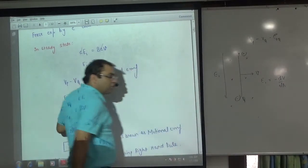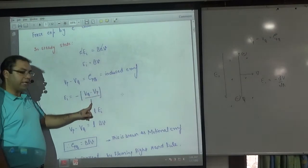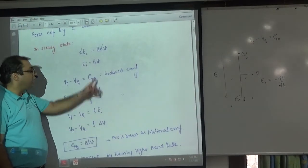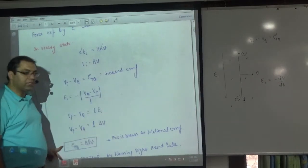Because it is coming down, final potential minus initial potential, VQ minus VP upon distance L. Minus inside, then VP minus VQ value is coming. Putting EI, the answer is BLV.